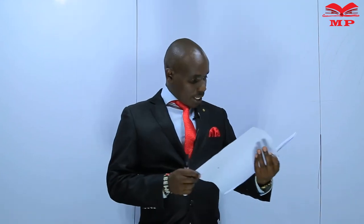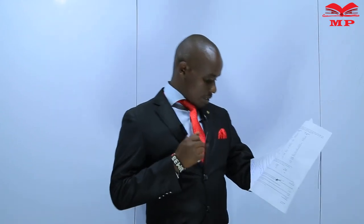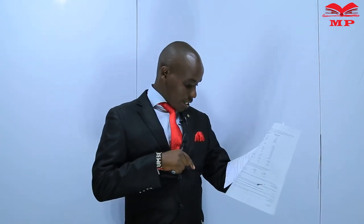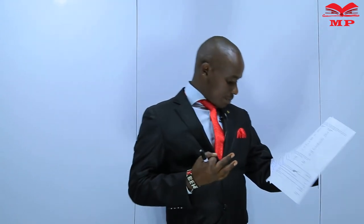Question number three: the examiner repeated the taxation of business income, examining insurance companies — how to compute the taxable income and how to deal with the related calculations. Question number four again repeated the taxation of business income, covering property developers and contractors, and also the theory of taxation.